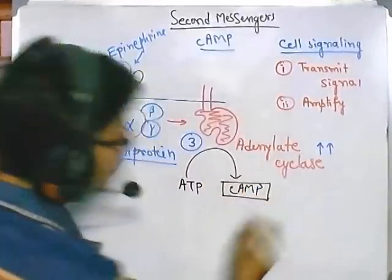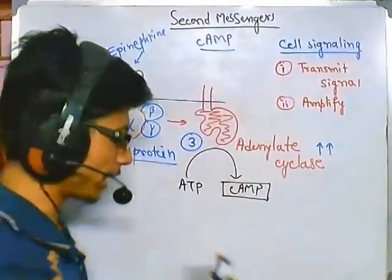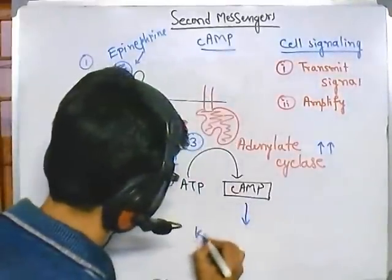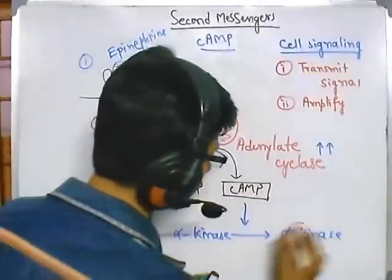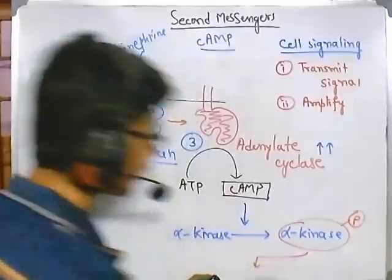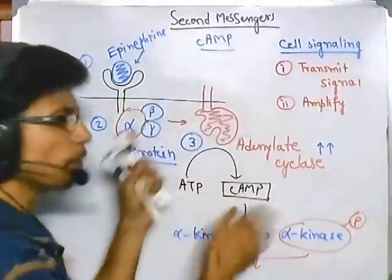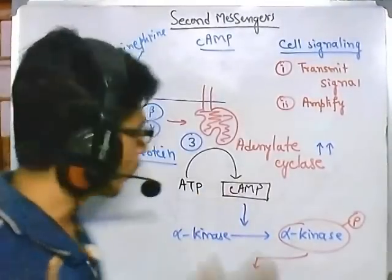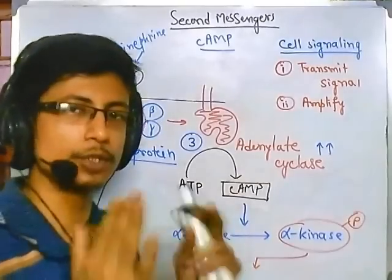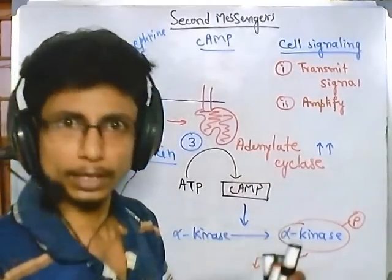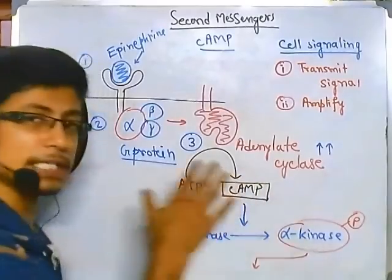Once adenylate cyclase is activated, it converts ATP — adenosine triphosphate — into cyclic AMP. Once adequate cyclic AMP is produced, cyclic AMP further phosphorylates proteins like a kinase, such as alpha kinase. Once alpha kinase is phosphorylated it becomes activated, and this alpha kinase further phosphorylates other proteins downstream. Up to the generation of cyclic AMP it's a one-way process, but once cyclic AMP is produced the amplification begins.